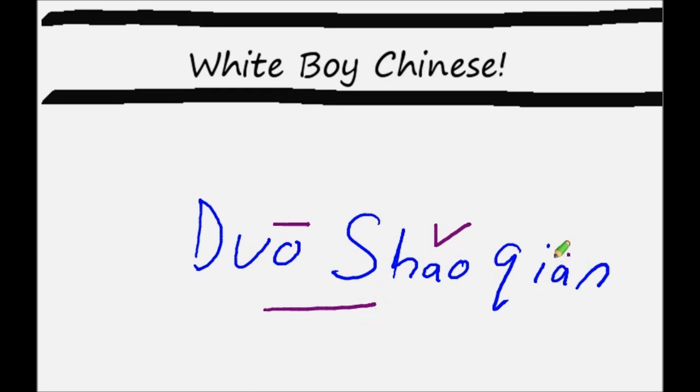qian, which is the second tone, means money. So by putting duo shao qian together, you'll be asking how much money, or how much is it in a more grammatically correct sense in English.